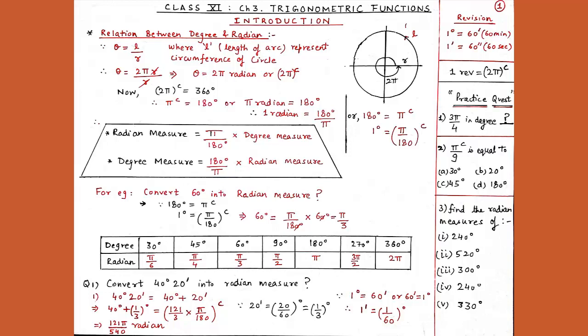Now we convert degree into radian. As already discussed, we always multiply by π upon 180. Since our degree value is 121 upon 3, multiplying by π upon 180 gives 121π, and 3 into 180 is 540. So our answer is 121π upon 540 radian.